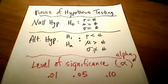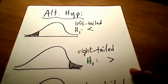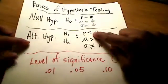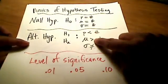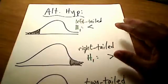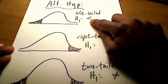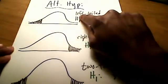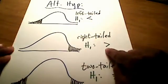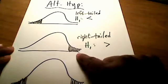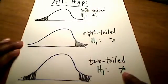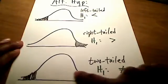The alternative hypothesis symbol tells us what kind of test we're going to do. If the alternative hypothesis has a less than symbol in it, we have a left-tail test. If it has a greater than symbol, we have a right-tail test. Or if it has the not equal to symbol, we have a two-tail test. That's important because in the traditional method, we are interested in something called critical values.